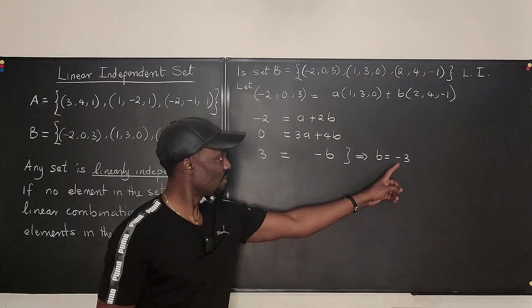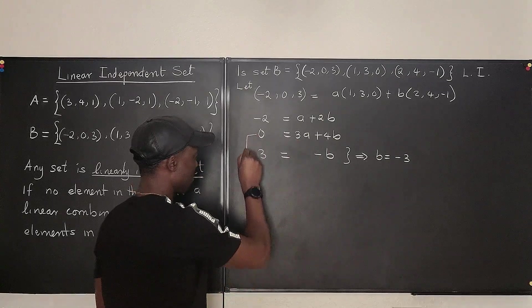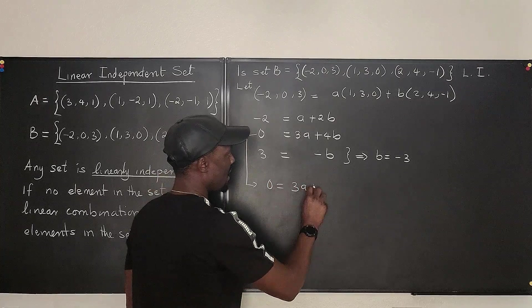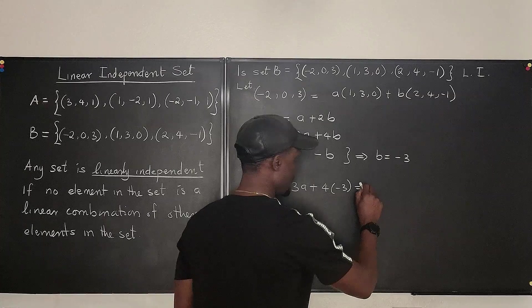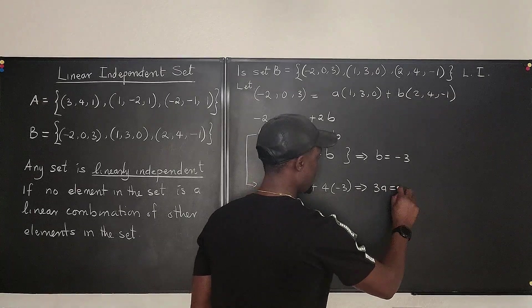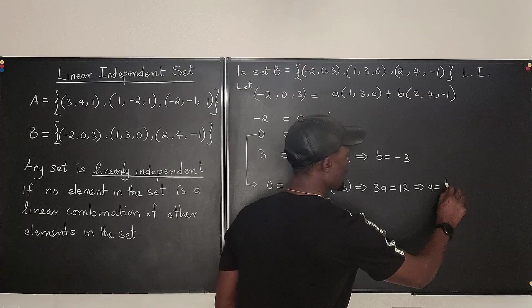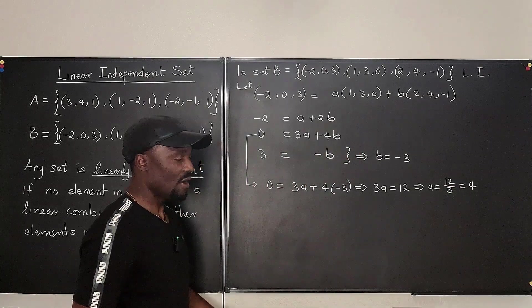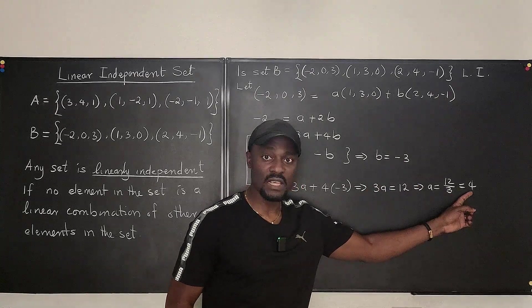And if B equals minus 3, let's go plug it in here. We know that 0 from here, we know that 0 will be equal to 3A plus 4 times minus 3. 12, which implies 3A is equal to 12, which implies A is equal to 12 over 3, which is equal to 4. So right now we got B equals minus 3 and A equals 4.